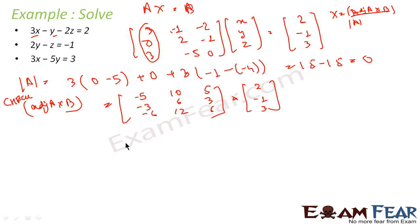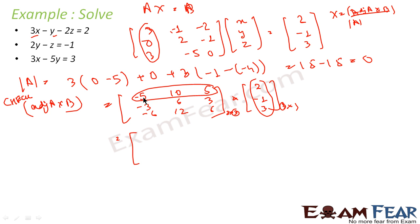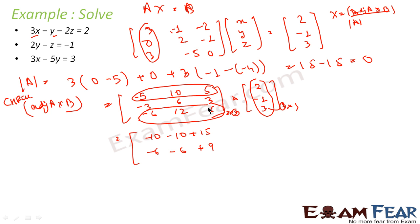The adjoint of A is a 3×3 matrix and B is 3×1, so multiplication is possible. Taking each row times the column: −5·2 = −10, plus 10·(−1) = −10, plus 5·3 = 15 gives 15 for the first entry. For the second row: −3·2 = −6, 6·(−1) = −6, 3·3 = 9. Third row: −6·2 = −12, 12·(−1) = −12, 6·3 = 18.